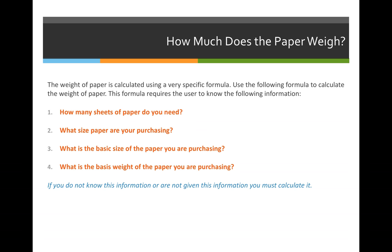We then need to identify the basic size of the paper that we're purchasing, because it affects the calculation of the weight of paper. And then we need to identify what the basis weight of the paper is — is it 80 pound, 100 pound, 120 pound, etc. If you do not have all of the answers to these four questions, you will not be able to calculate the weight of the paper.